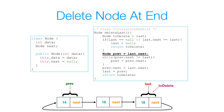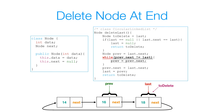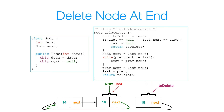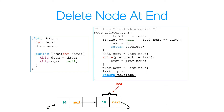I create a prev reference initially set to last.next — the first node. Using a while loop, while prev.next is not equal to last, I set prev equal to prev.next. Once prev.next equals last, I exit the loop, set prev.next to last.next, and set last to prev. So last now references the new last node after deletion. Then I simply return to-delete. That's how we delete a node at the end of a list.